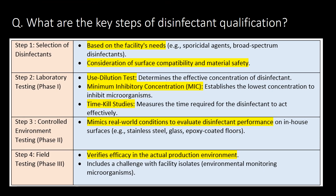What are the key steps of disinfectant qualification? Step 1: Selection of disinfectants. Selection of disinfectants is done based on the facility's needs and consideration of surface compatibility and material safety. Step 2: Laboratory testing, or Phase 1. Here we perform the use dilution test, MIC (minimum inhibitory concentration) test, and time kill studies.